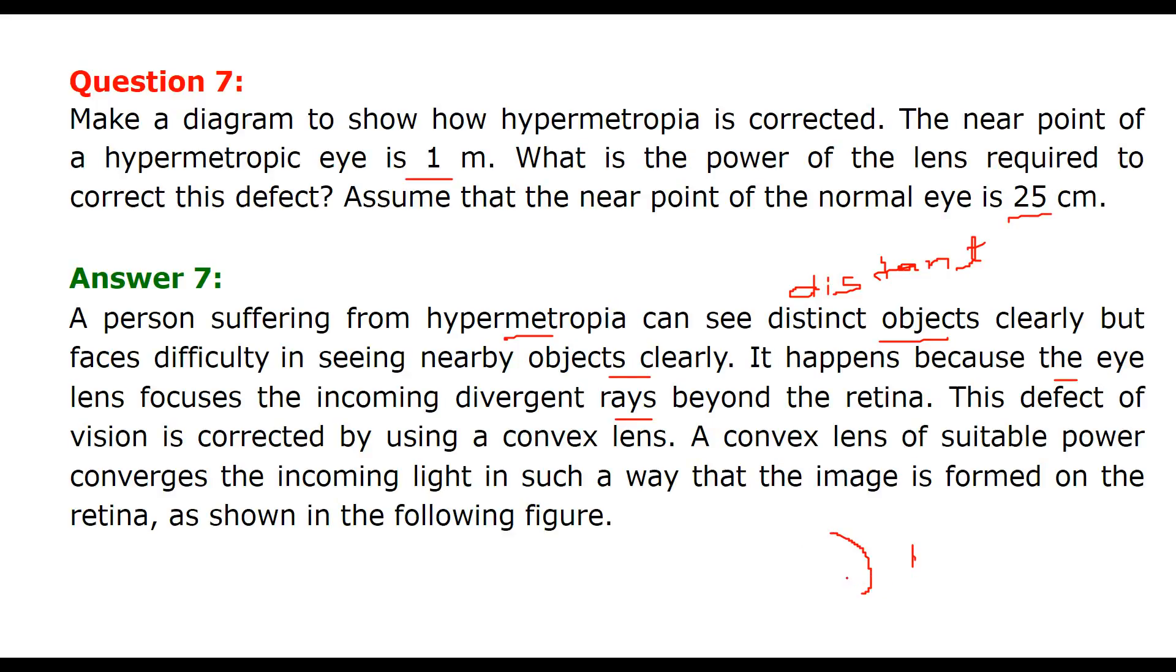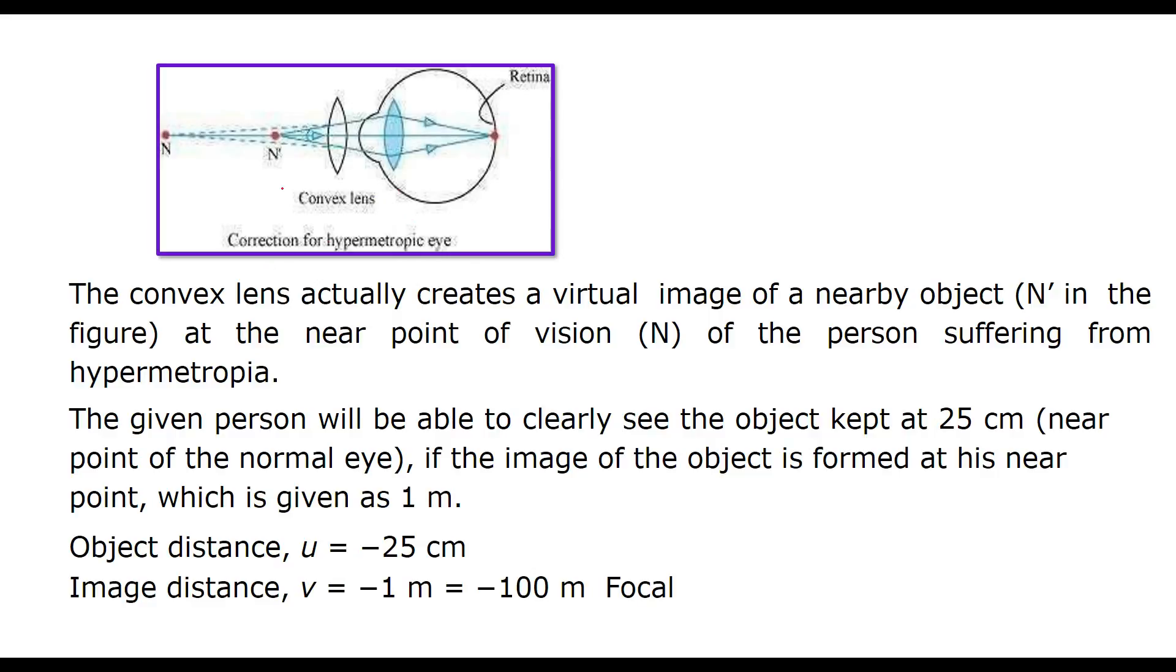So this is the retina, here is the image being formed. In case of myopia or hypermetropia, the image is not formed on the retina. The defect of vision is corrected by using convex lens of suitable power. It will converge the light in such a way that the image should be formed on the retina. This is the convex lens we are using, this is the eye lens, and now the image forms here. So the convex lens actually creates a virtual image of nearby object N' at the near point of vision N of the person who is suffering from hypermetropia.